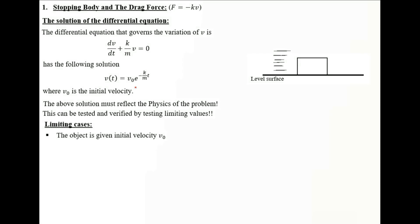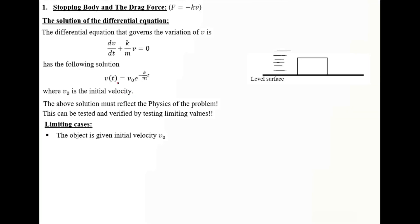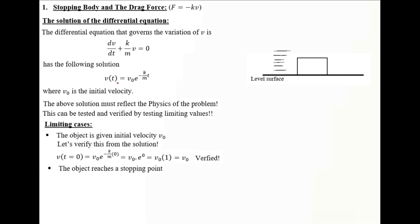Limiting cases: the object is given initial velocity V0, so at T equals 0, replacing time by 0, we get e to the power 0 equals 1, giving us V0. This is verified. Now, the object should reach a stopping point. The final velocity is attained after an infinite amount of time.